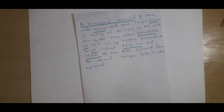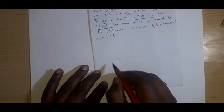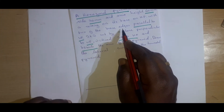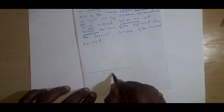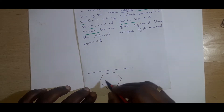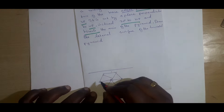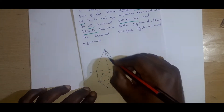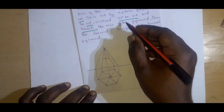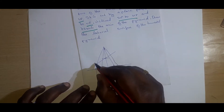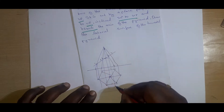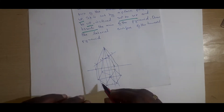Draw the lateral surface development of the pyramid. Here we can draw a rough diagram. First we draw the XY line. It is a hexagonal pyramid with two of the base edges parallel to VP, so one edge and the second edge are parallel to VP. We find the apex point, join everything, and develop the solid. We draw a small horizontal line and take 30 degrees to HP. We name the points 1, 2, 3, 4, 5, 6.